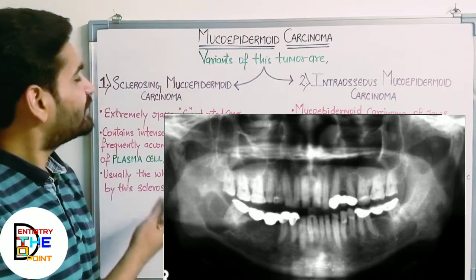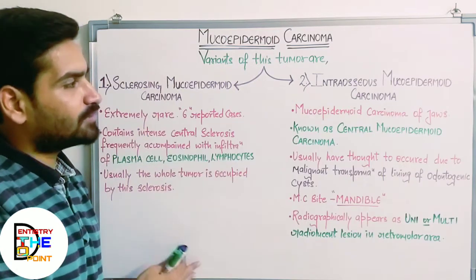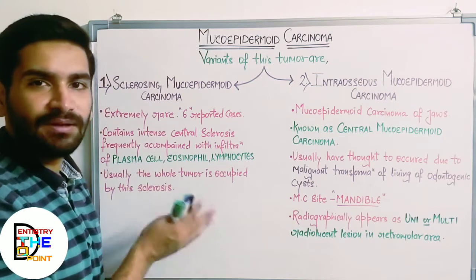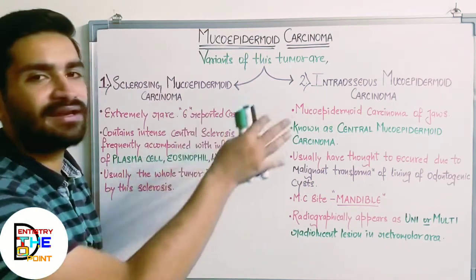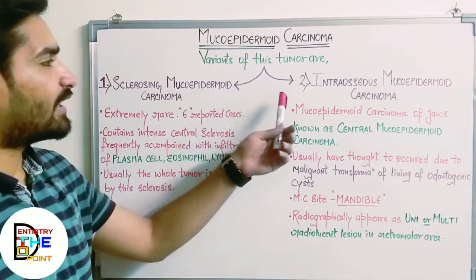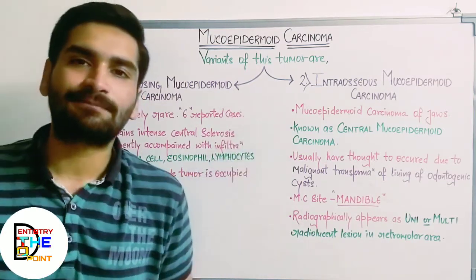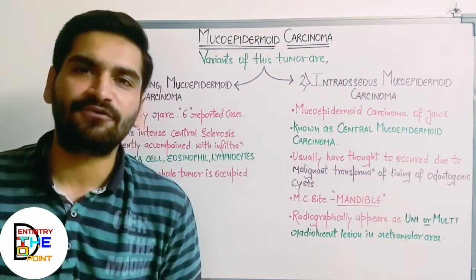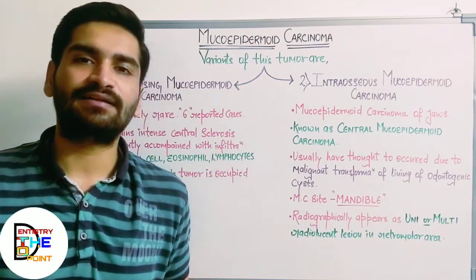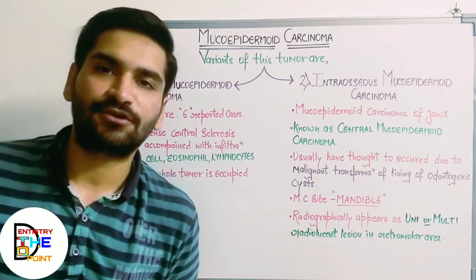These were the two variants of mucoepidermoid carcinoma. There is nothing much to remember — just remember the names and two or three points about the characteristics of each variant. If you have understood the lecture, please like, share, and subscribe, and don't forget to hit the bell button to get updates on new upcoming lectures.